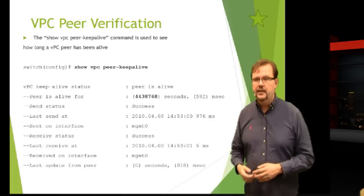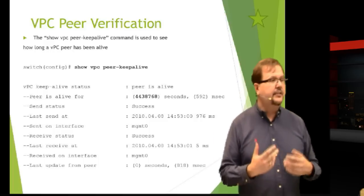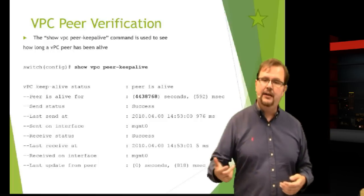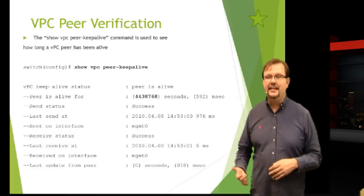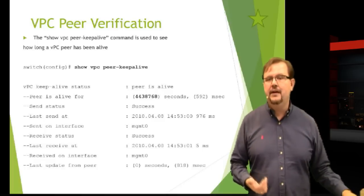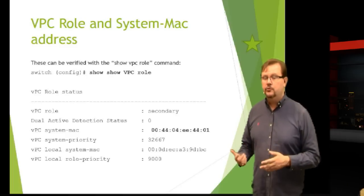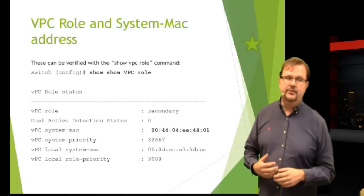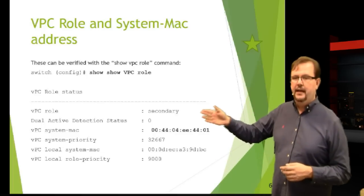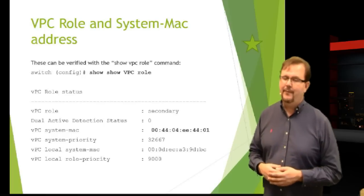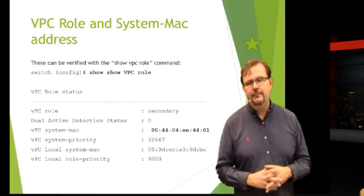We also should know another command that's useful - show VPC peer keep alive. This command is going to allow me to see how long my peer's been alive. In this case, this peer has been alive for like 4 million seconds or something. If I want to say how long has this link been up, how long has that peer been alive, I can use show VPC peer keep alive. If I want to take a look and see the roles or the MAC address for the system - it has a system MAC address that's used when we become peers - in this case, I can see his role is secondary and it's just a MAC address. This is just a scattering of the commands that you need to know for VPC.